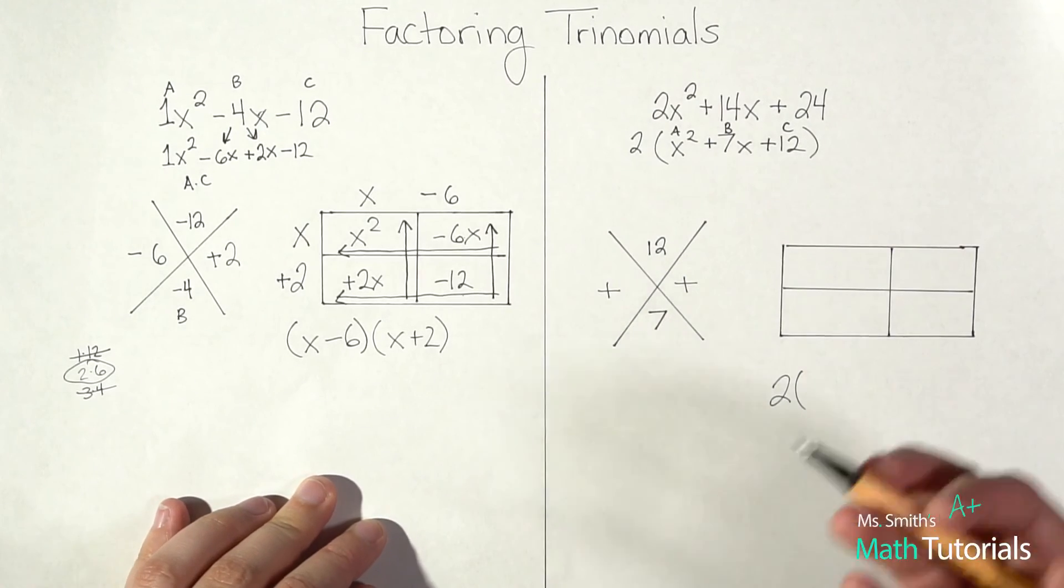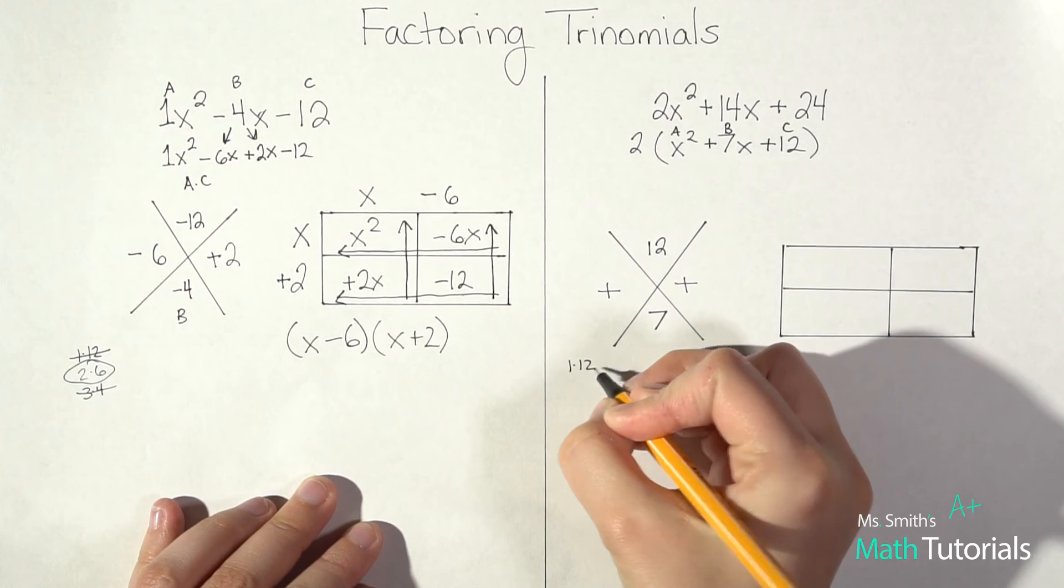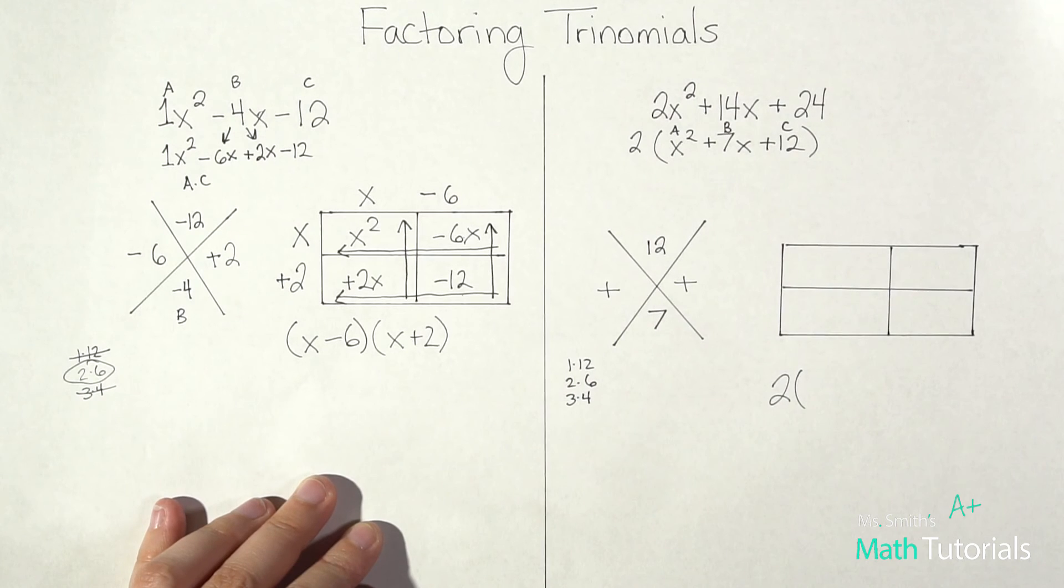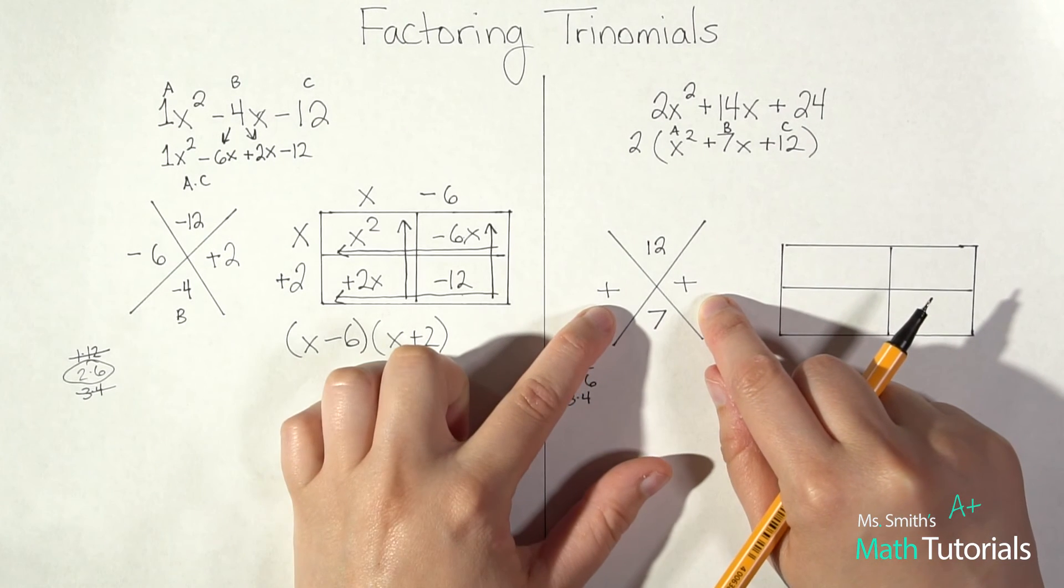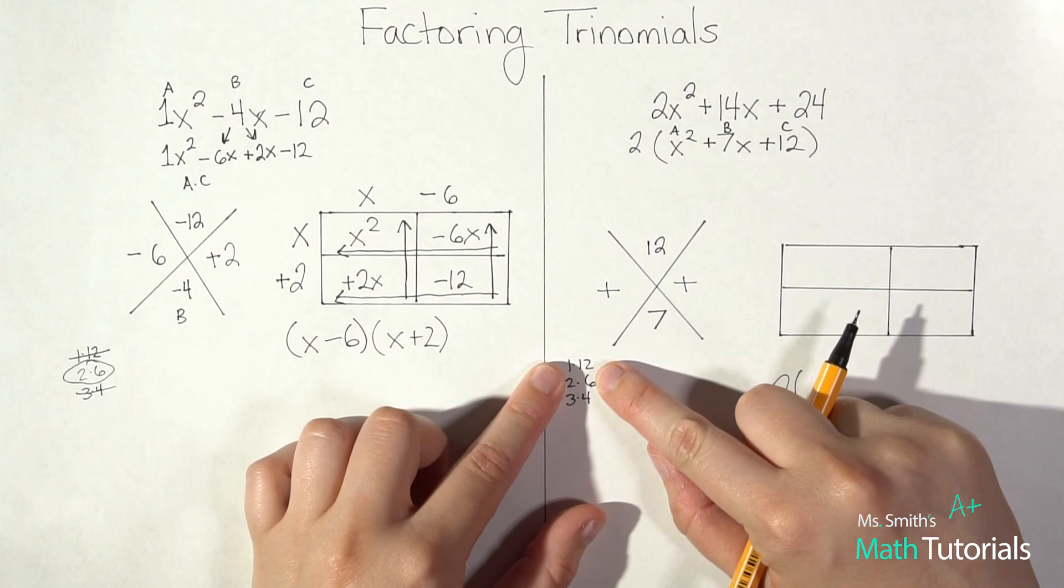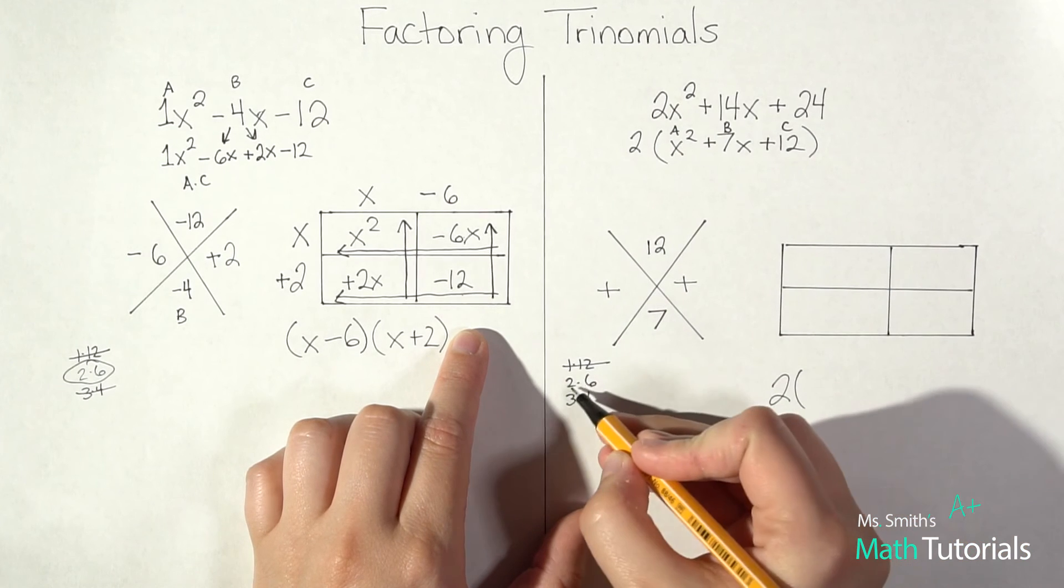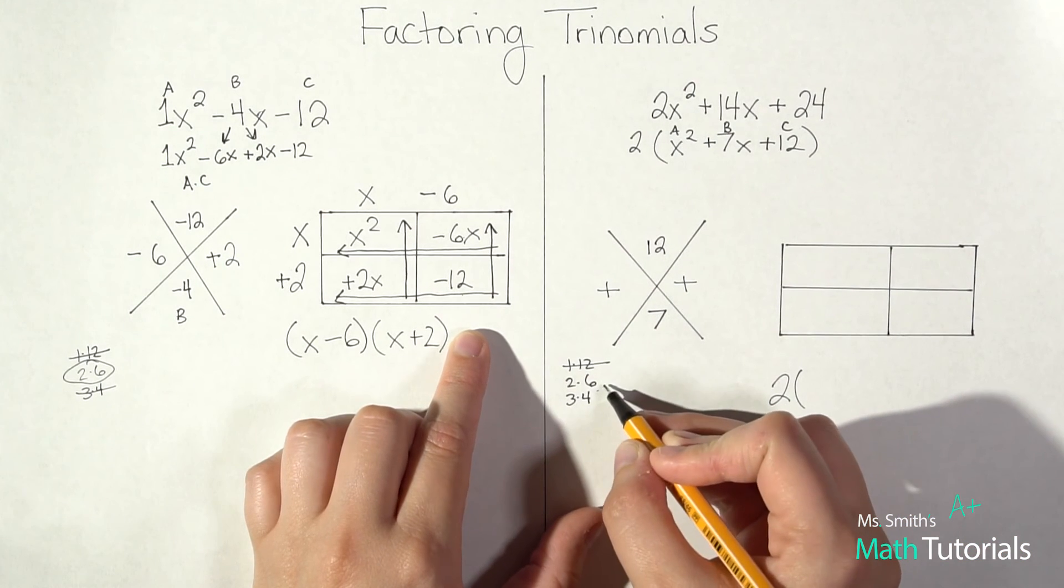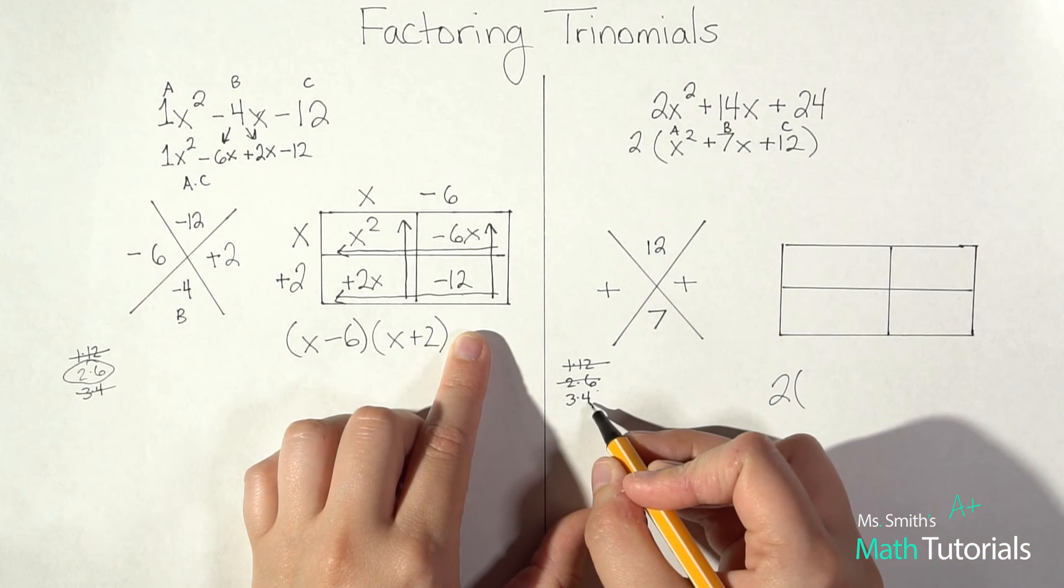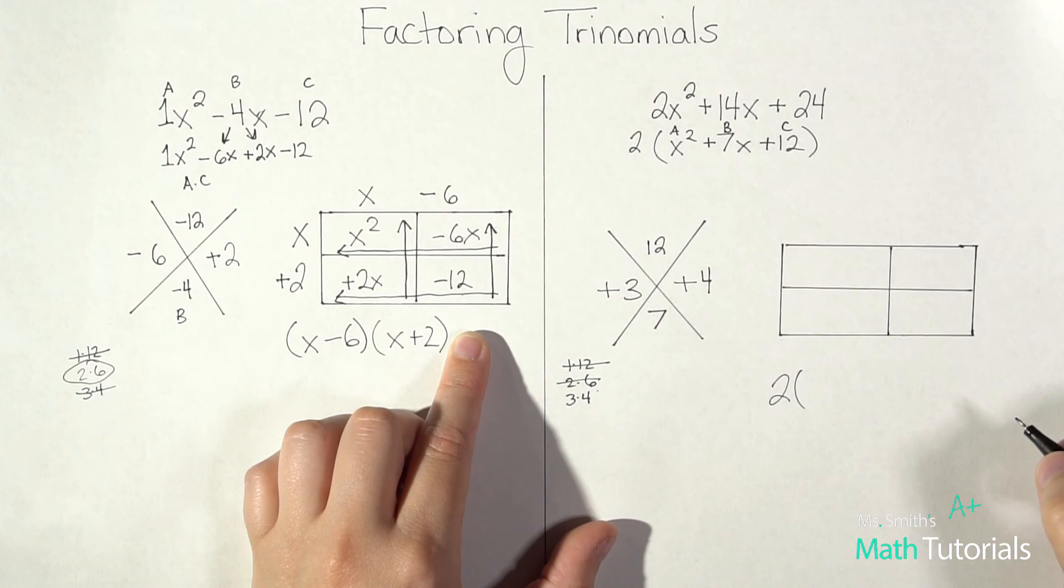So let's think. I've got 12. Let's think of everything that goes into 12. 1 times 12, 2 times 6, 3 times 4, and that's everything. So this time we're adding two numbers together. They're both positive. We're going to get positive 7. So 1 and 12? No. 1 plus 12 is 13. 2 and 6? No. 6 plus 2 is 8. 3 plus 4? Yes. There's our two numbers. 3 and 4, and they'll both be positive.